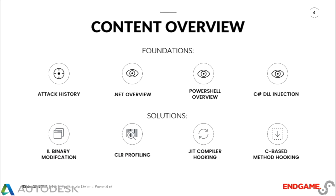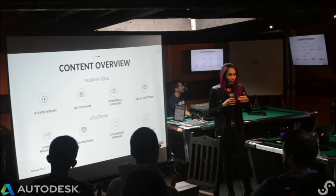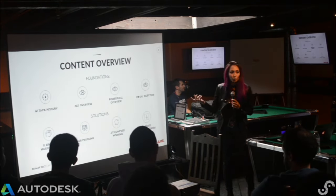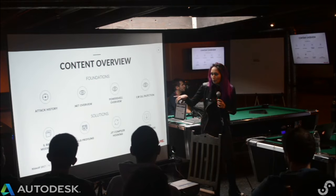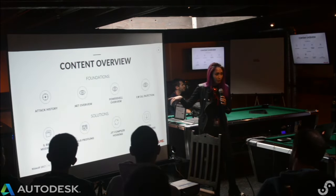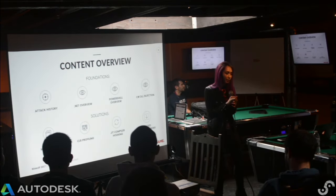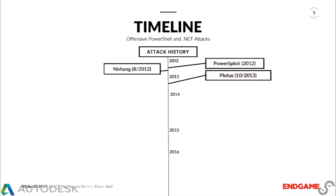I'm going to go over the attack history first, just a little overview. I'll go over .NET — bear with me, if you already know .NET, I'm just going to run through it quickly and highlight the important points. Then I'll go over PowerShell, specifically bypasses and all that. Then I'll talk about how I do C# DLL injection and some of the solutions. For my solutions, I have four different types: IL binary modification, CLR profiling, JIT compiler hooking, and CBase method hooking.